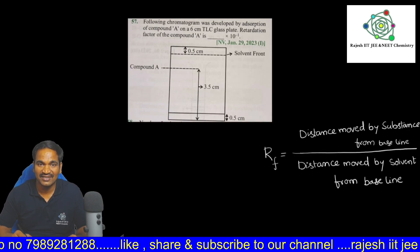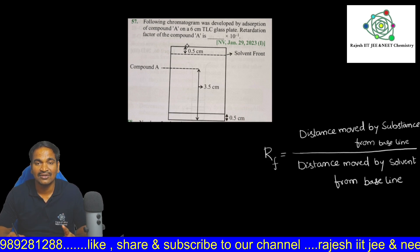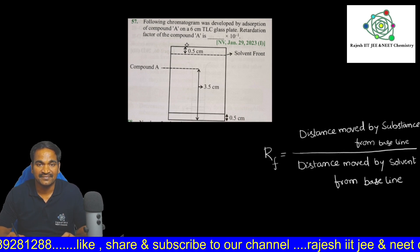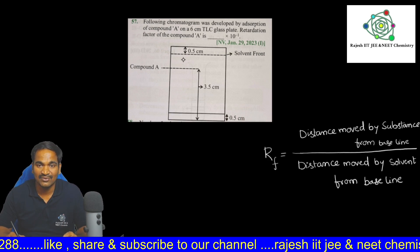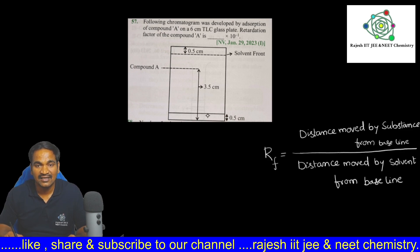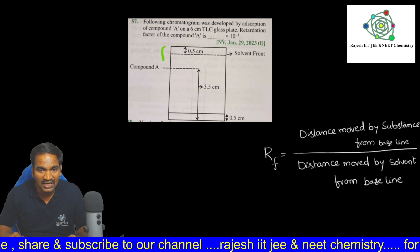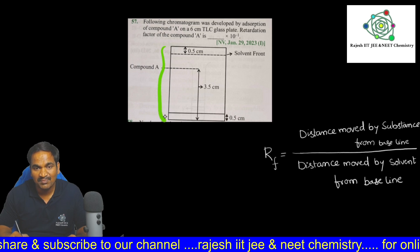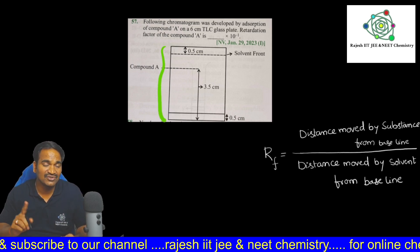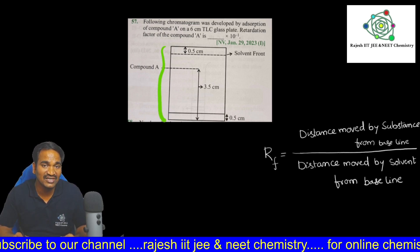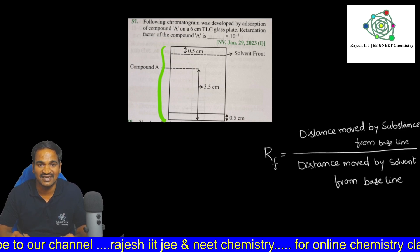Now let's solve the next model. Here also they are asking the retardation factor value of substance A. In this problem, they give the total plate length, but we should not take that plate length directly — we should take the distance traveled from the baseline.